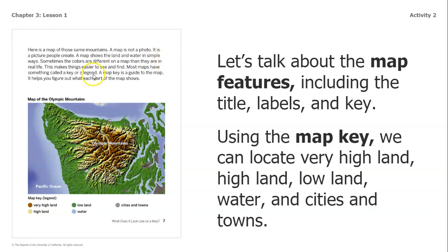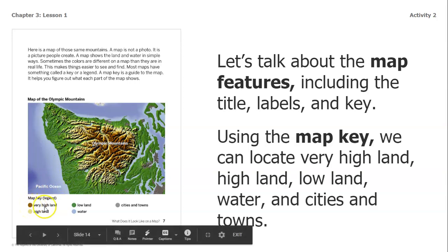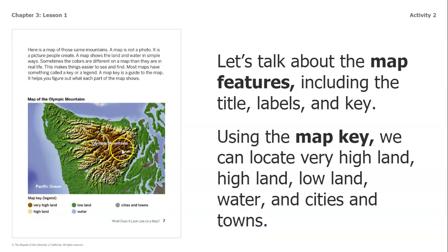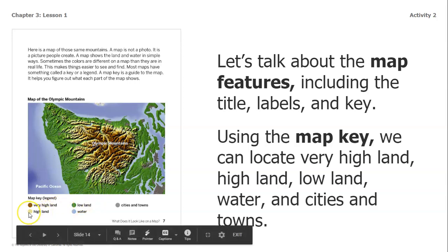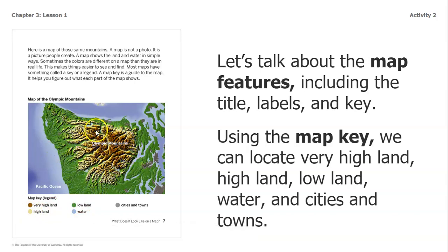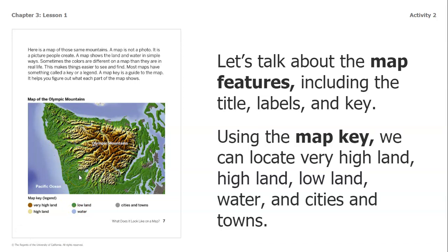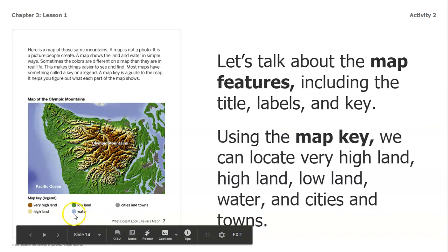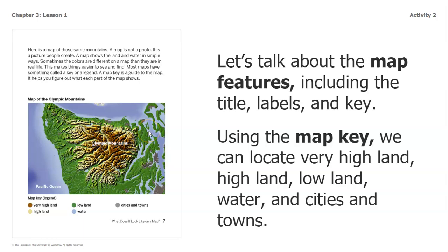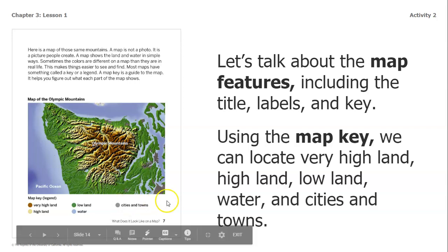Looking at the map, I see the title at the very top which says 'Map of the Olympic Mountains.' I also see the map key, which helps us figure out what we are looking at. The brown dot shows very highland — that area right where it says Olympic Mountains is going to be the high area, probably the top peaks. The lighter brown color is highland, in a circle around the very highland — those are probably the mountains but lower down. The green shows lowland, which I'm assuming is flat, surrounding the mountains. Water is shown in blue, surrounding the lowland. Cities and towns are represented by a gray dot or gray area near the Olympic Mountains.